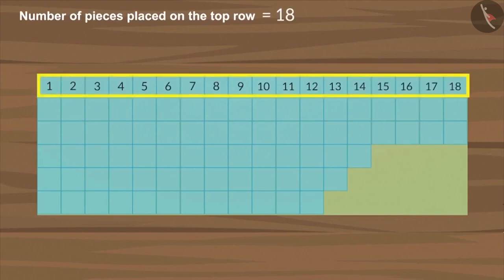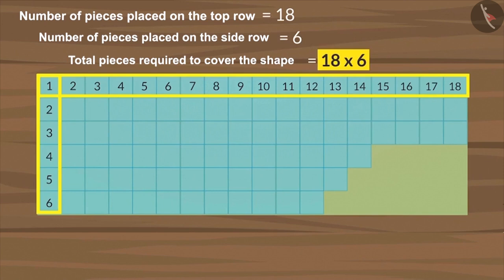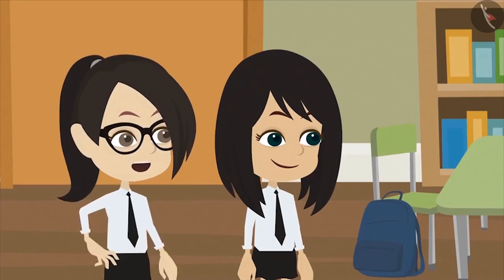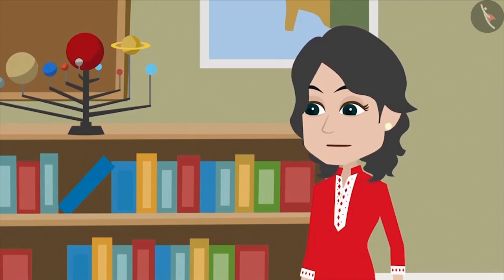Eighteen pieces are placed on the top row of the desk and six on the side. So we multiply them to identify how many pieces will be required to cover the entire desk. We get one hundred and eight on multiplying six by eighteen. So does this mean that we will require one hundred and eight pieces to cover this desk completely? Yes.